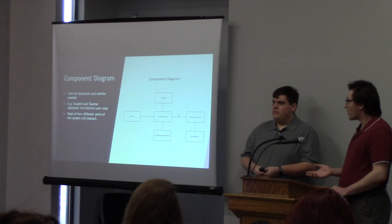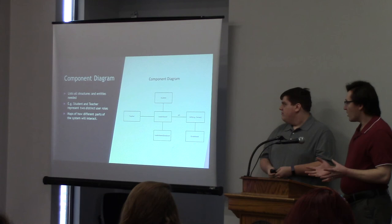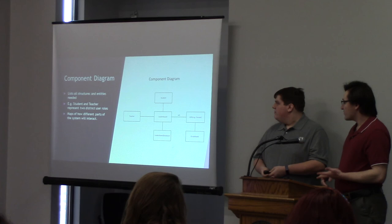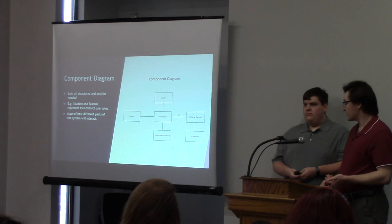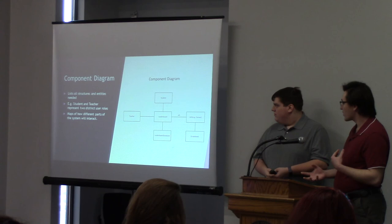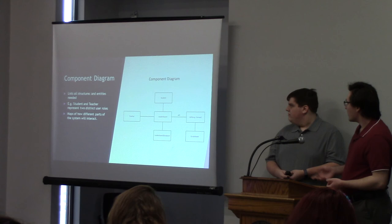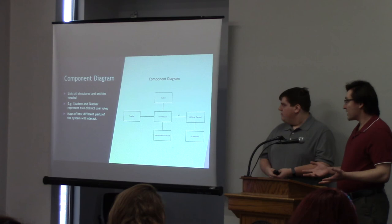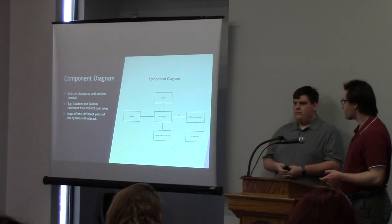The next thing we talk about is a component diagram, which is basically laying out all of the major players in our leaderboard application. We've got the learning management system, which is Canvas; we've got the leaderboard; Canvas has its own built-in gradebook that we can't touch; and then we've got the leaderboard's database, where we can store preferences for each user. The teacher and student are shown as components because they have different permissions.